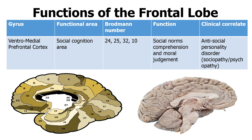People who develop antisocial personality disorders — what we commonly call sociopathy, which is based on someone's experiences or nurture — and psychopathy, which is based on nature, how someone is actually born, are affected in this area. Sociopathy is considered an acquired antisocial disorder, while psychopathy is considered innate; you are born with it. The main area shown to be implicated in both conditions is the ventromedial prefrontal cortex, which governs your comprehension of social norms and moral judgment.